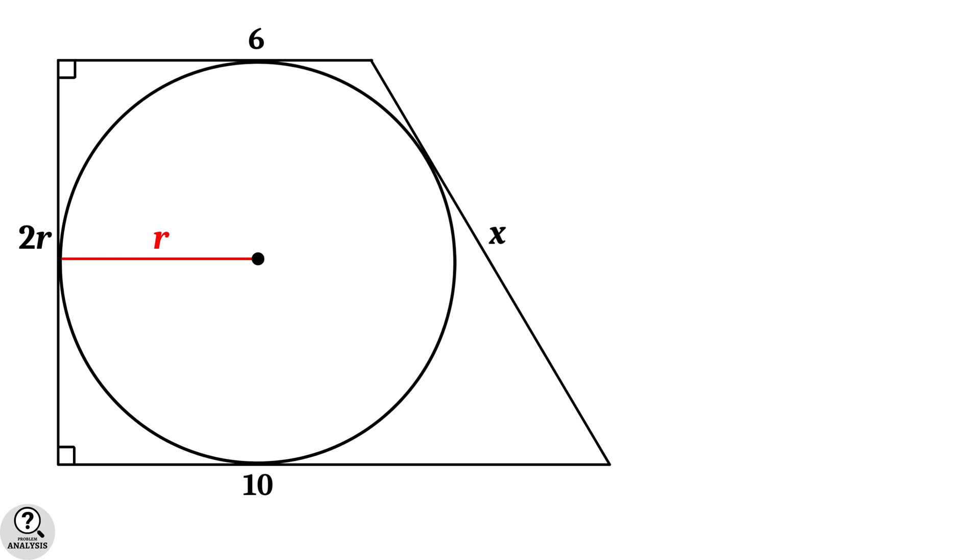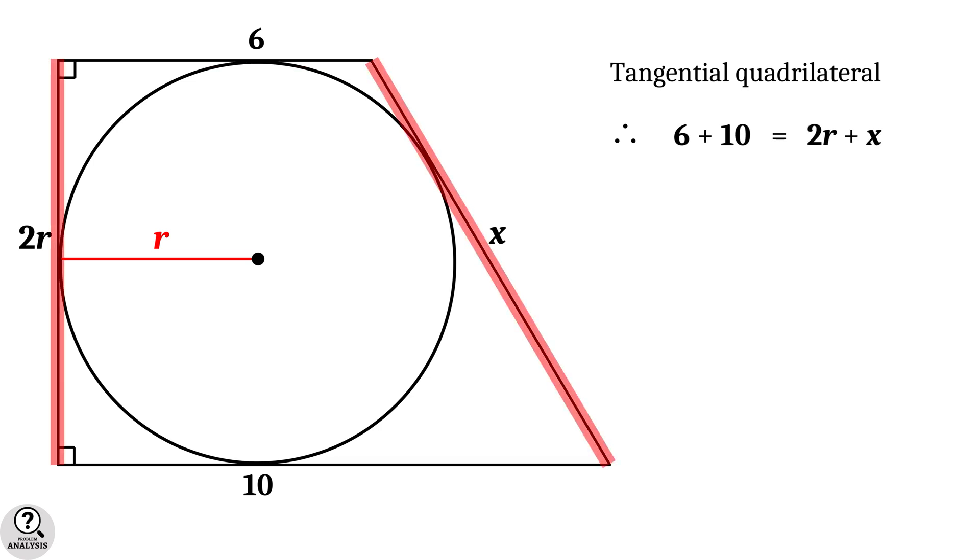It is clear that our trapezoid is a tangential quadrilateral. And hence, as we told, the sum of each pairs of opposite sides are equal. First pair is the parallel sides. And their sum is 6 plus 10.